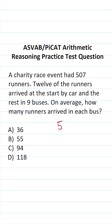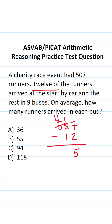We know that we had 507 runners in the event and we have to subtract out the 12 runners who arrived at the start by car. So this is going to be 507 minus 12. 7 minus 2 is 5. 0 minus 1 we can't do, so we have to borrow. This becomes 4, this becomes 10. 10 minus 1 is 9. 4 minus nothing is 4. So we know that 495 of the runners arrived in nine different buses.